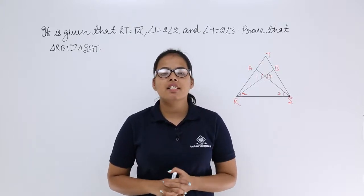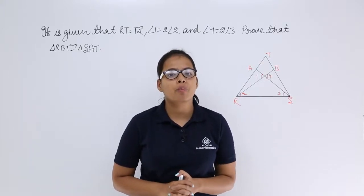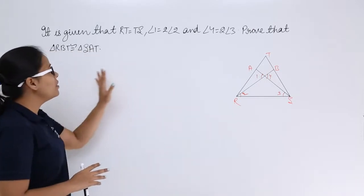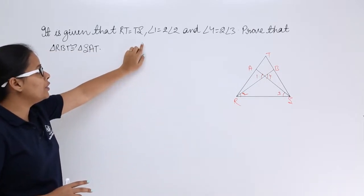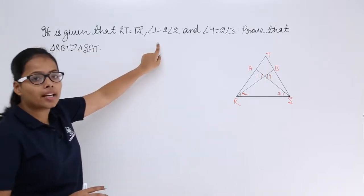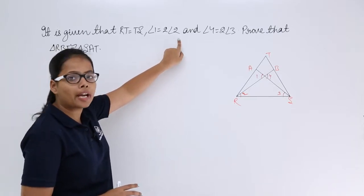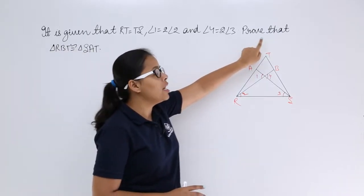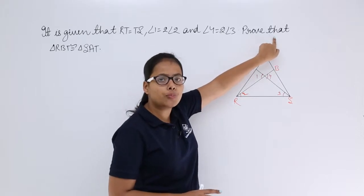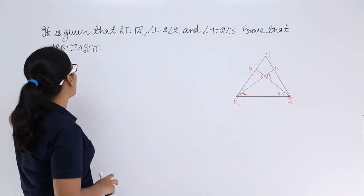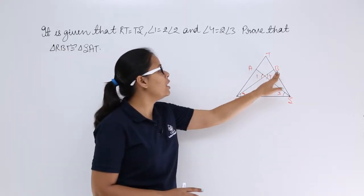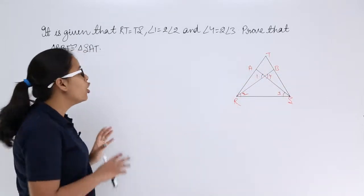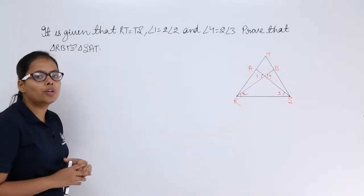Hello guys, let's discuss this problem from R.D. Sharma, which says: it is given that RT is equal to TS, angle 1 is equal to twice of angle 2, and angle 4 is equal to twice of angle 3. You need to prove that triangle RBT and triangle SAT are congruent to each other.